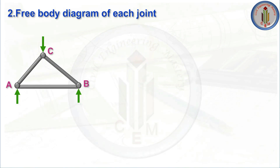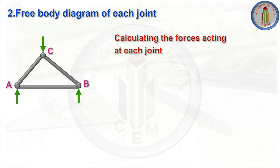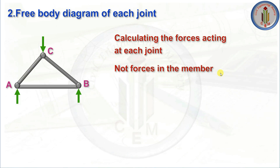Next, we calculate the free body diagram of each joint to solve the internal forces acting at each joint using the equilibrium equation. Remember: previously we calculated reaction forces; now we are calculating the unknown forces acting at each joint. Also very importantly, we are calculating the forces at each joint, not the forces in the members themselves.